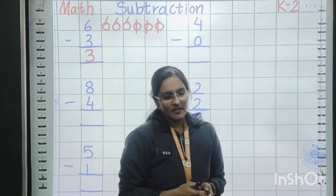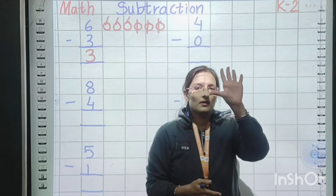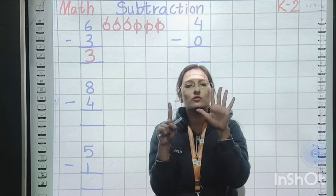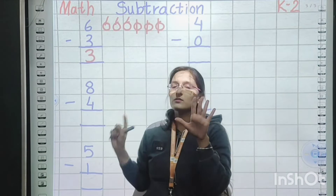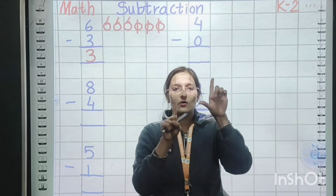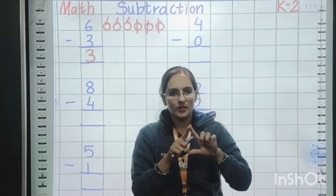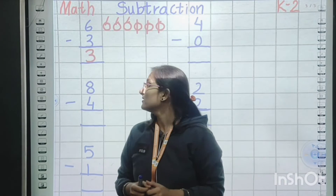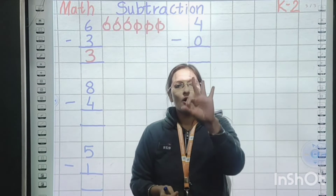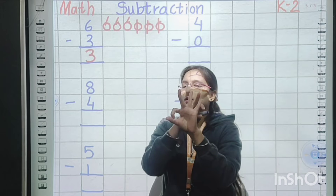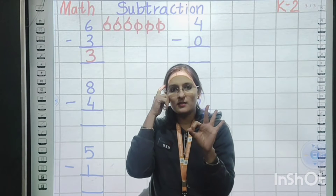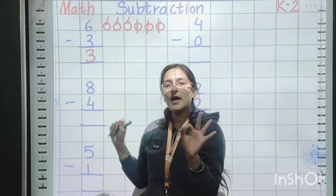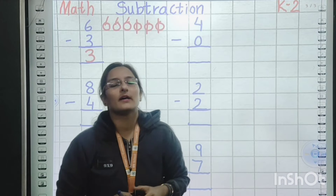Next method, kids. Very easily you can use fingers. Make six fingers, then deduct three fingers: one, two, three — three fingers down. How many are remaining? One, two, three. The answer is three. Next method: bigger number six in mind, smaller number three on fingers. Before six, count back: five, four, three. So three will be the answer. In all ways you can check your answer — it is correct.